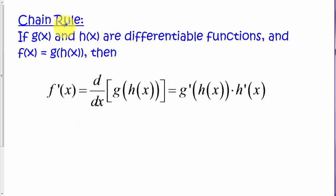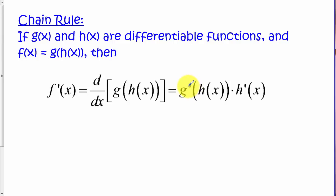Here's the chain rule. We have two functions, g of x and h of x, that each have to be separately differentiable. If we form a new function f of x by taking the composite of those two functions, then the chain rule says the derivative of f of x is as shown here. Essentially, we take the derivative of the outside function and evaluate it at h of x, and we multiply that by the derivative of the inside function. So we're chaining together these functions — we've got h of x chained together with its h prime. That's where the name comes from.